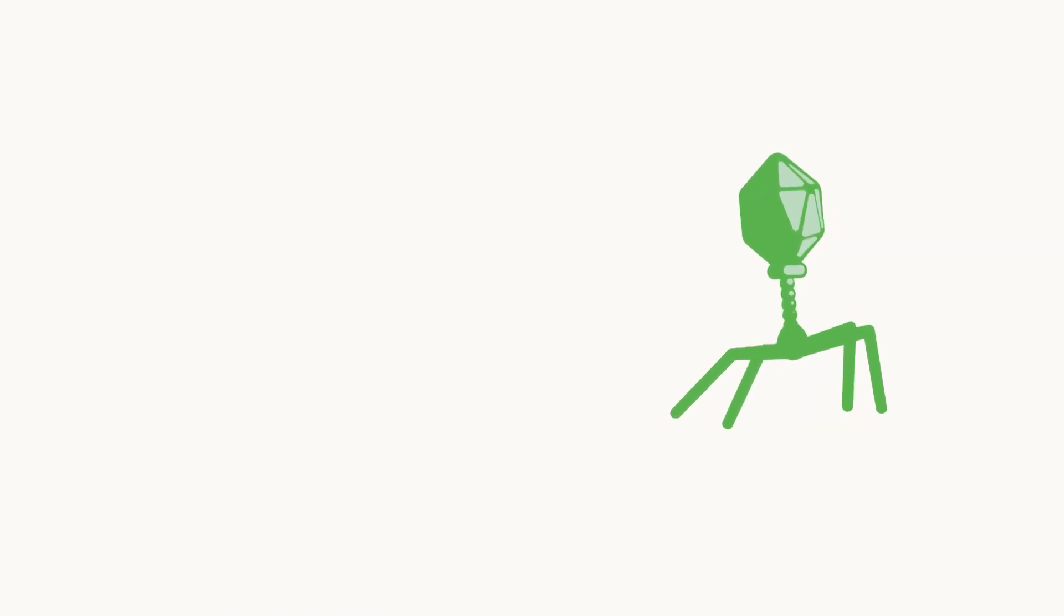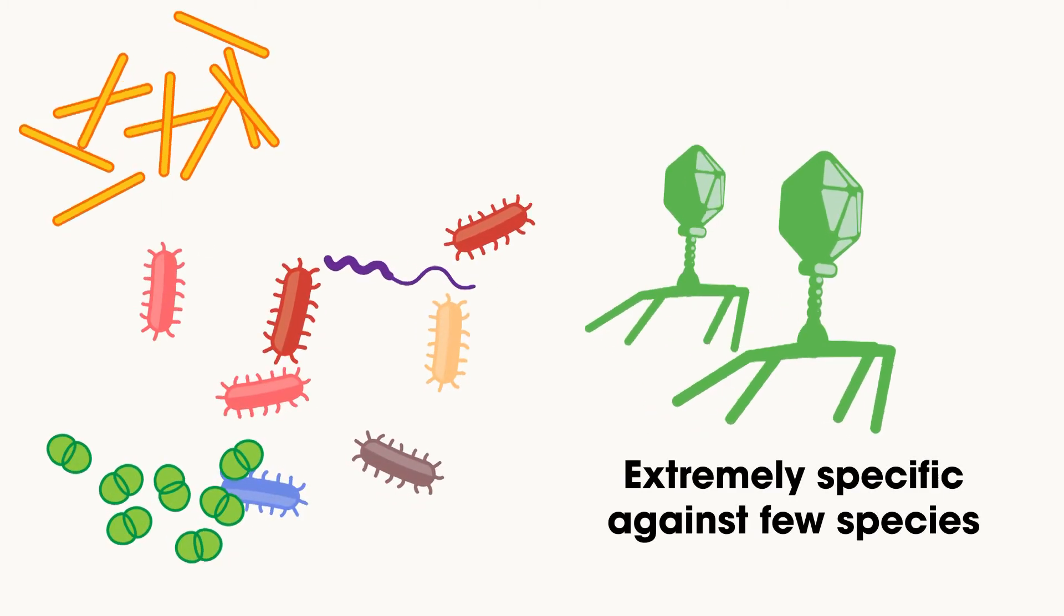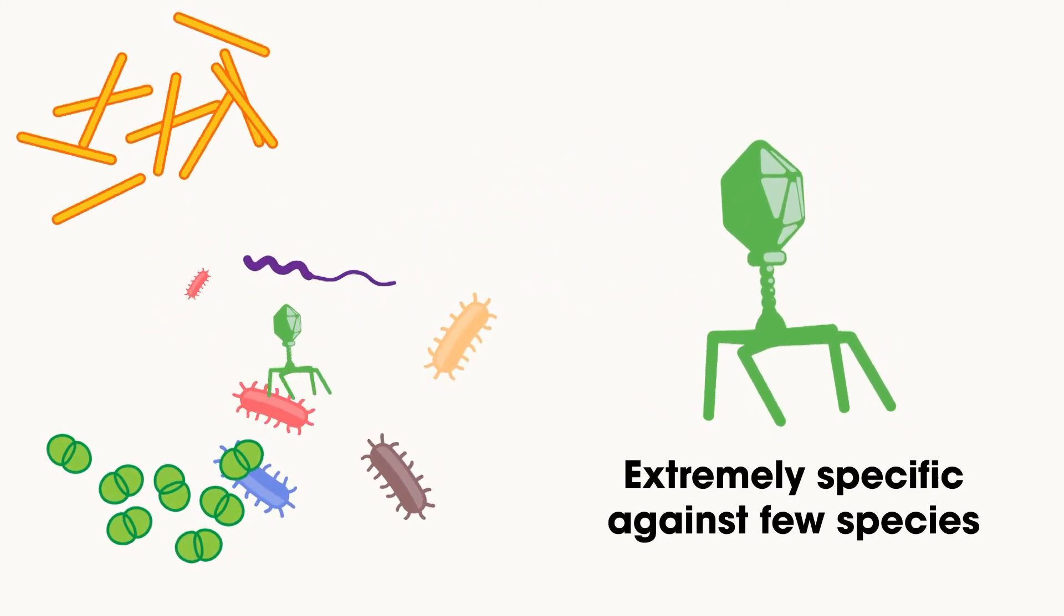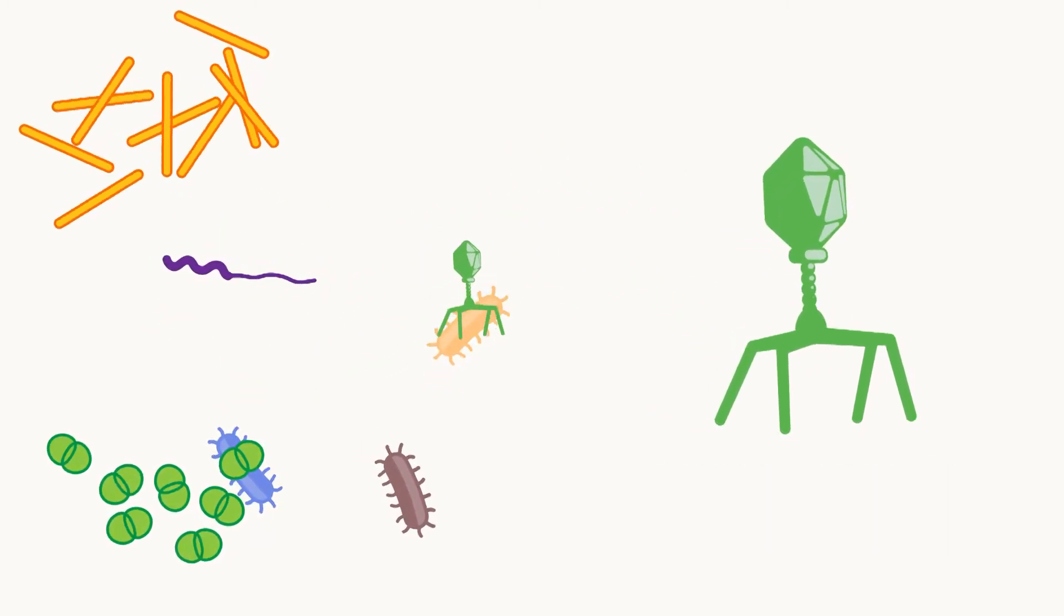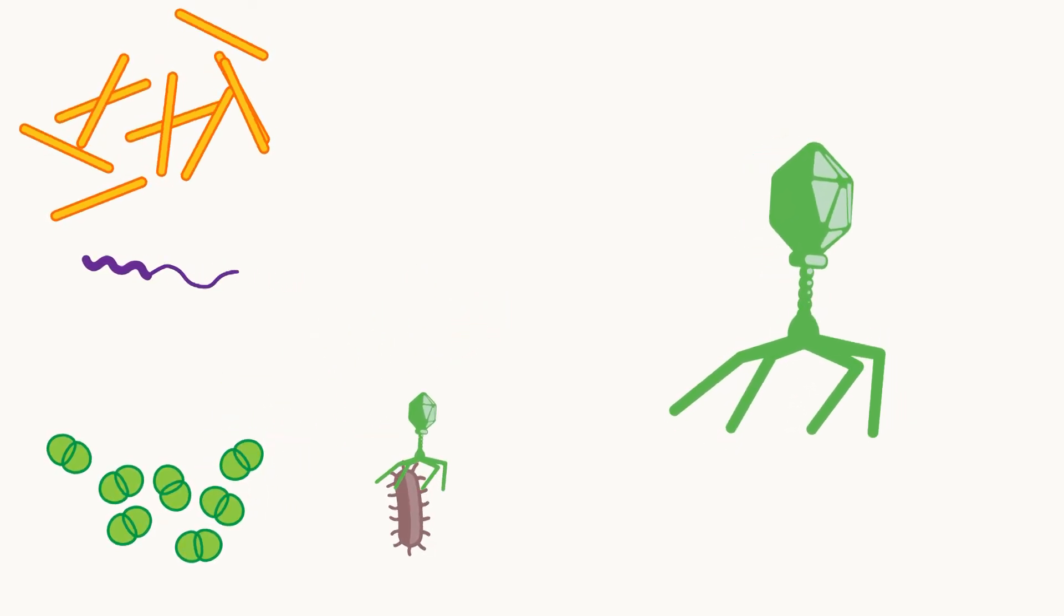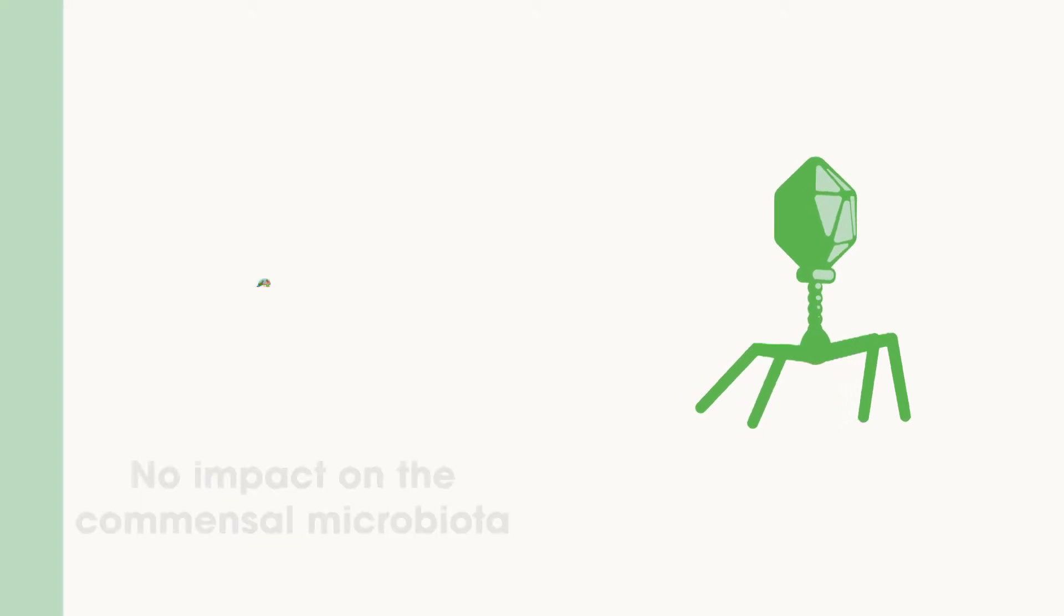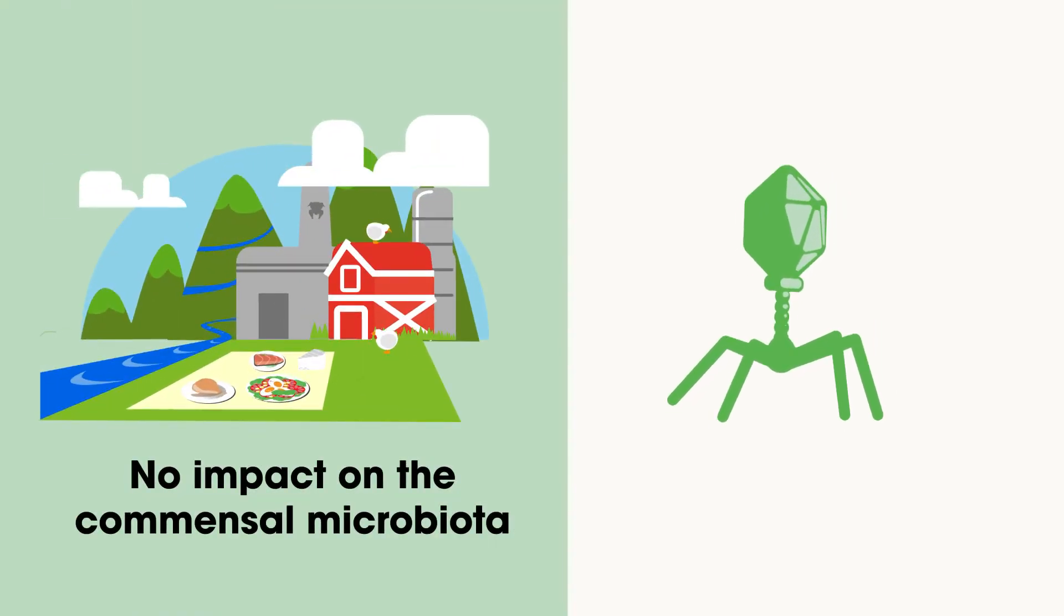They are extremely specific. Each phage can typically infect one or few strains within a single species and less frequently, few strains of different species within the same genus. So they do not affect other bacteria present in the food, the host or the environment.